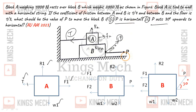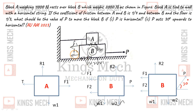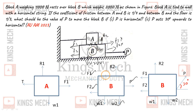For block B, it has its own weight W2, plus the weight W1 from block A acts downward at the contact surface. There are two friction forces on block B: friction F1 between A and B (at the top surface), and friction F2 between B and the floor (at the bottom). F1 and F2 both act opposite to the direction of motion of B.